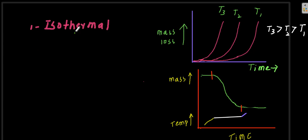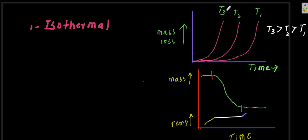The first type is isothermal gravimetry. Isothermal means at the same temperature, so at a given temperature the mass loss is studied as a function of time. For example, you can see three curves — T3 is a higher temperature than T2, and T2 is a higher temperature than T1.